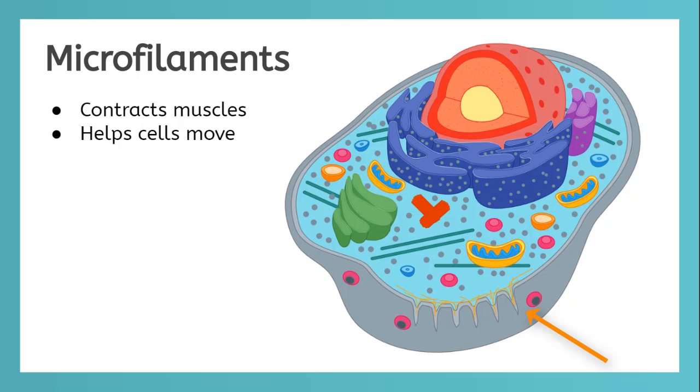The orange chains just beneath the cell membrane are called microfilaments. They also act as the skeleton of the cell, helping the cell keep its shape and allowing the cell to move, especially in muscle cells. The microfilaments allow muscles to contract when you flex.